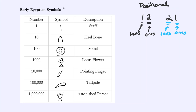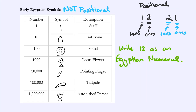So if we wanted to represent 12 in the Egyptian symbols, we see that to represent a 10 we do this upside-down U — the heel bone. So if I write that, that means 10. Then to get to 12, I also need two ones, which are just two lines because each line represents one. And this would be the number 12. It would also be the same number 12 if written in reverse order, but convention has it that we go from larger numbers to smaller numbers left to right.